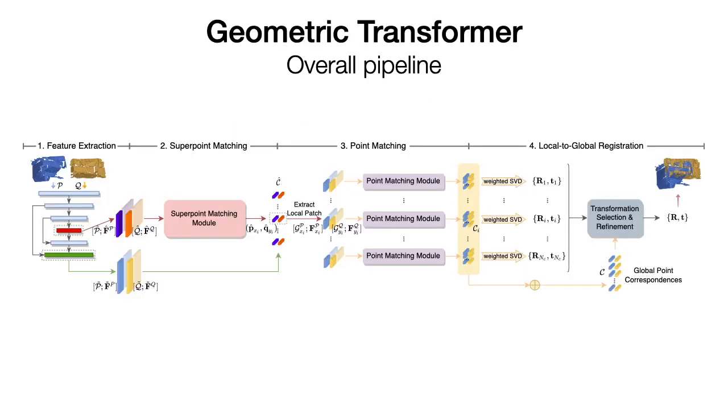To tackle these problems, our geometric Transformer encodes the transformation invariant global structures of the point clouds to extract accurate correspondences, and finally achieves robust RANSAC-free registration.